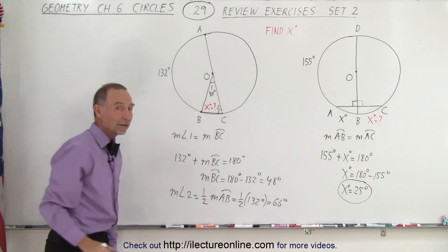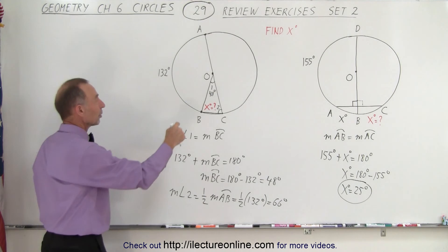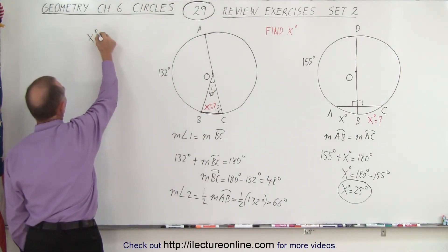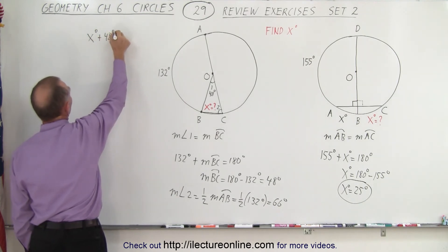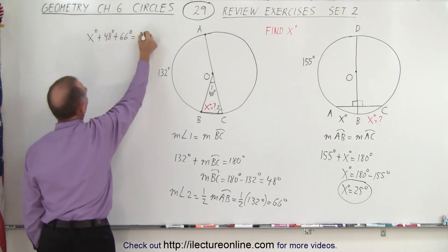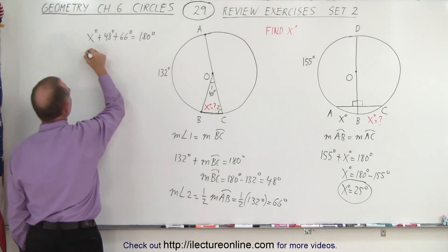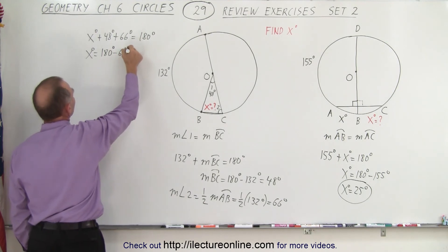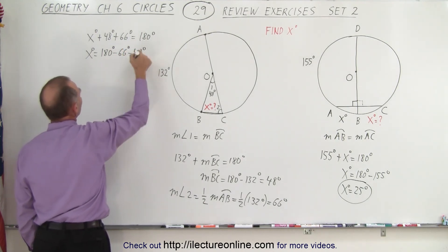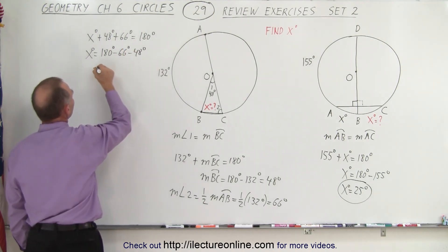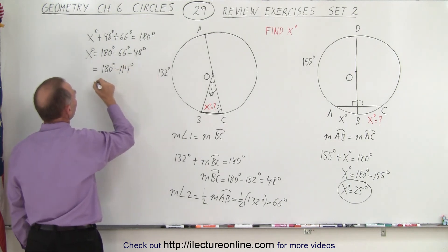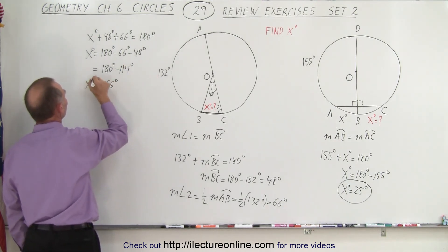Now we have those two angles and, of course, in a triangle, we know that all three angles must add up to 180 degrees, which means that x degrees plus 48 degrees plus 66 degrees must add up to 180 degrees. Which means that x degrees equals 180 degrees minus 66 degrees minus 48 degrees. Now these two together, that is equal to 180 degrees minus 114 degrees. That means that this is equal to 66 degrees.